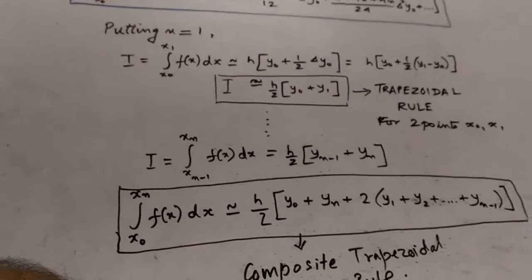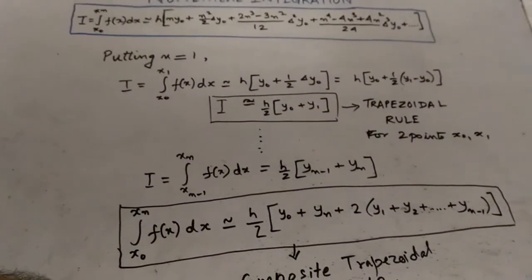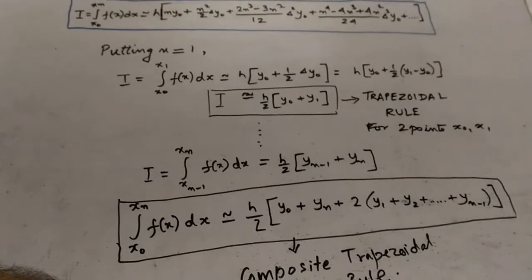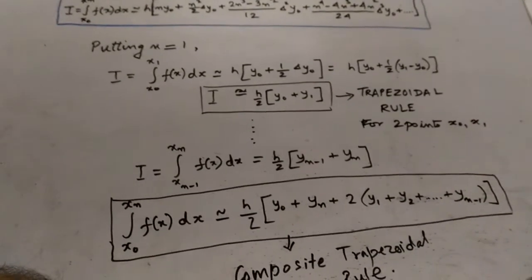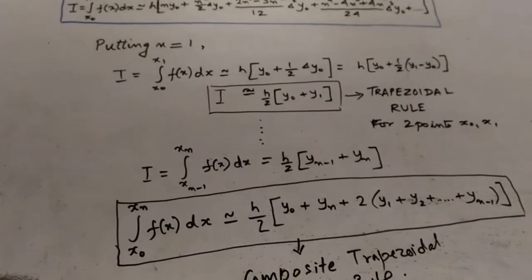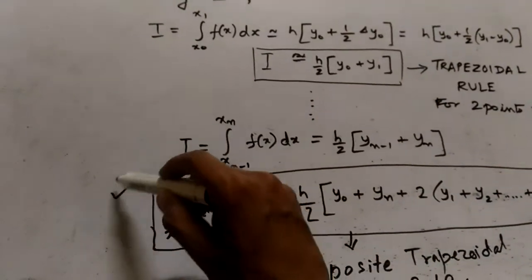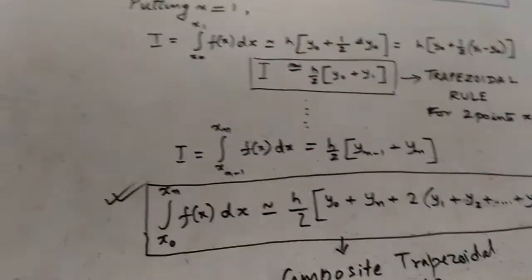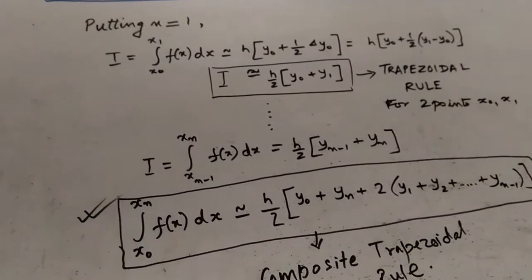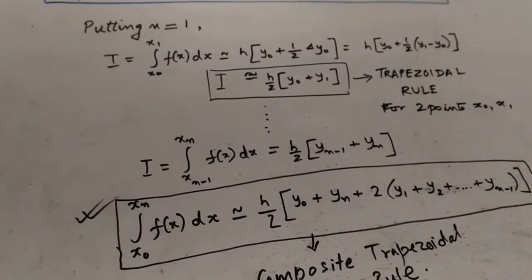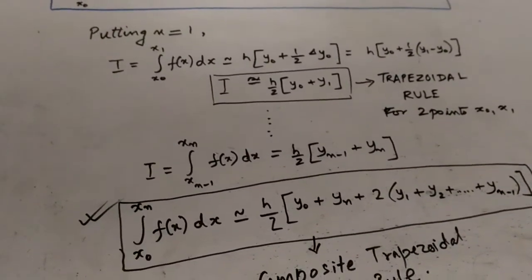This formula is known as the composite trapezoidal rule. You need not remember the whole derivation — you only need to remember this composite trapezoidal rule formula, which will help you to solve problems using the trapezoidal rule.